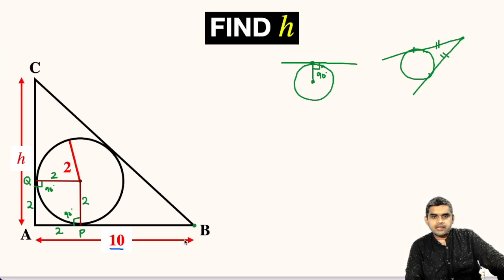Here B is that external point. BR and BP will be the tangent to this circle. So, the length must be equal according to this theorem.